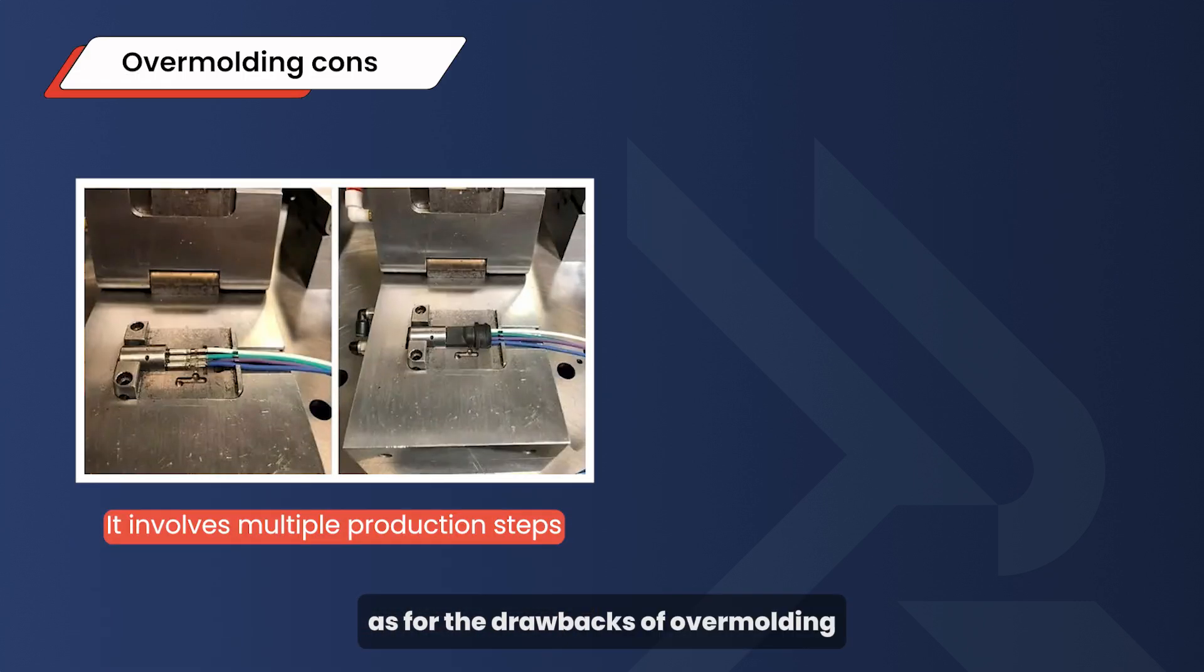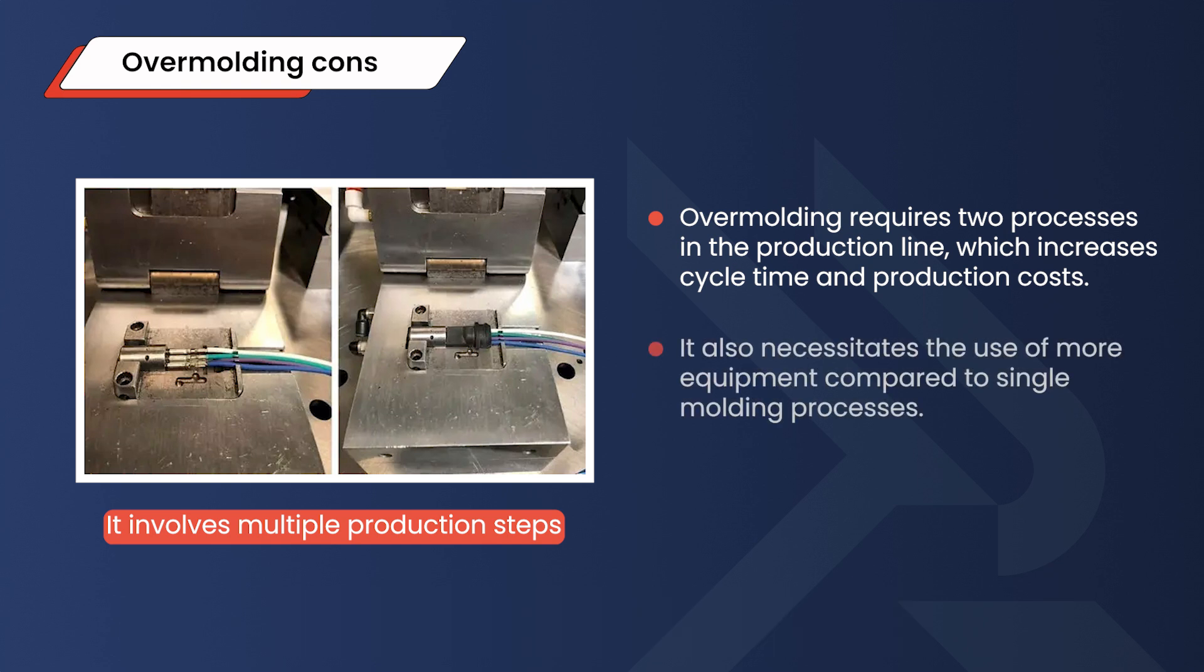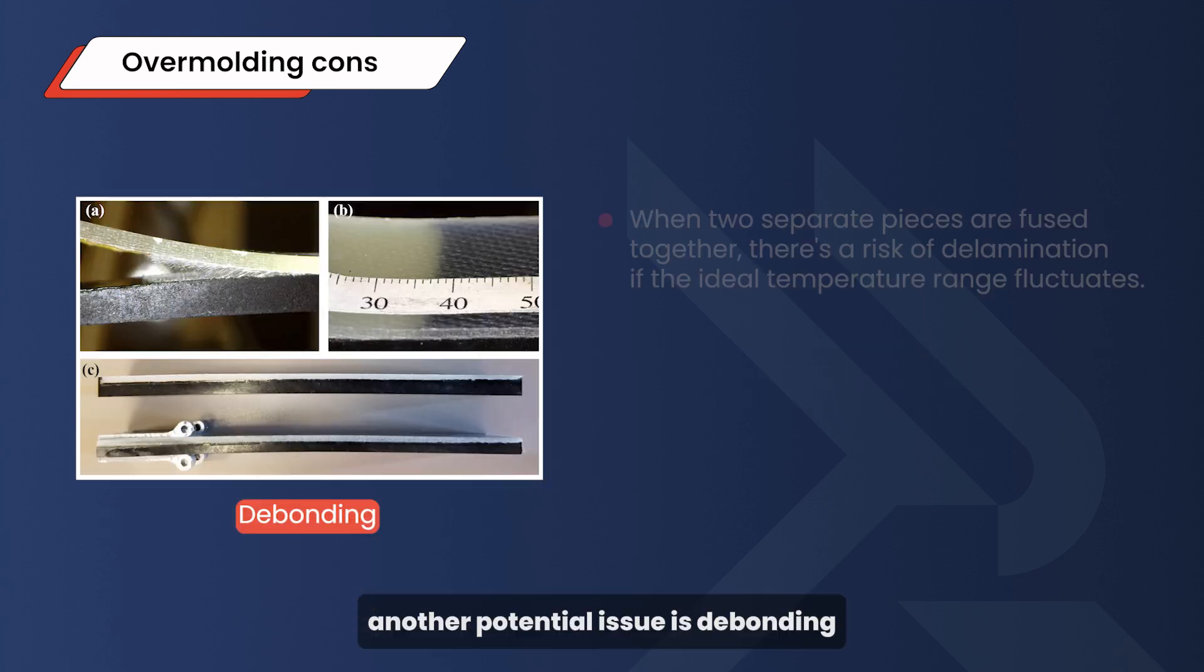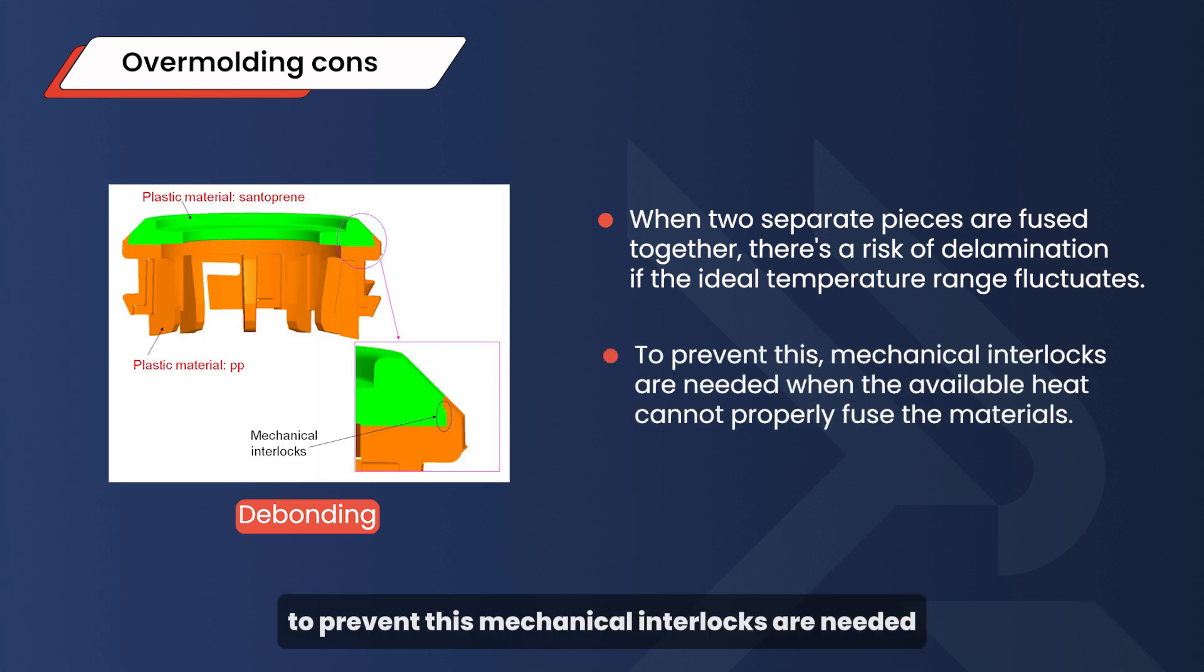As for the drawbacks of overmolding, one is the multiple production steps involved. Overmolding requires two processes in the production line, which increases cycle time and production costs. It also necessitates the use of more equipment compared to single molding processes. Another potential issue is debonding. When two separate pieces are fused together, there's a risk of delamination if the ideal temperature range fluctuates. To prevent this, mechanical interlocks are needed when the available heat cannot properly fuse the materials.